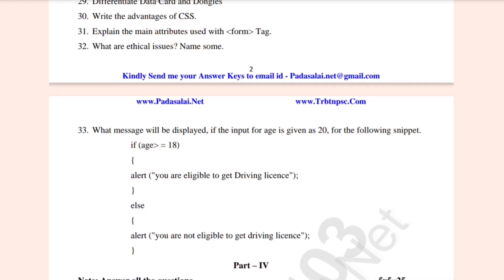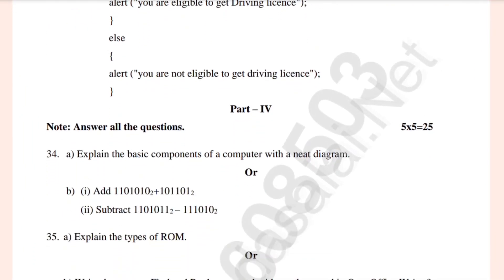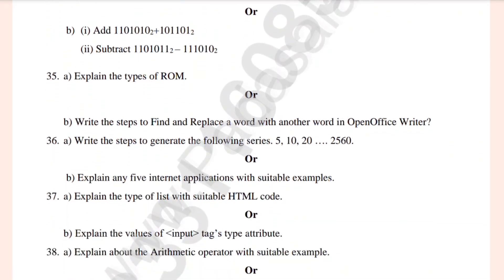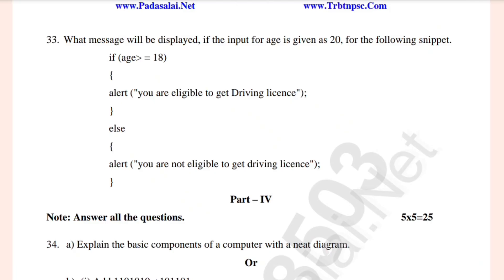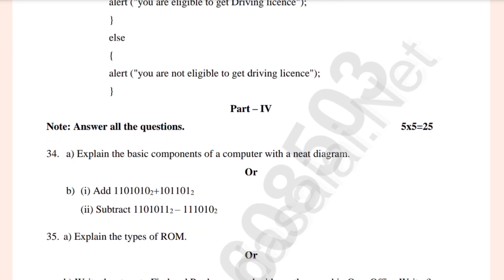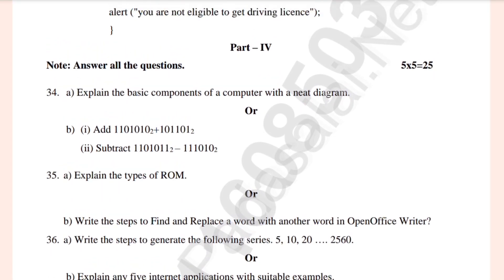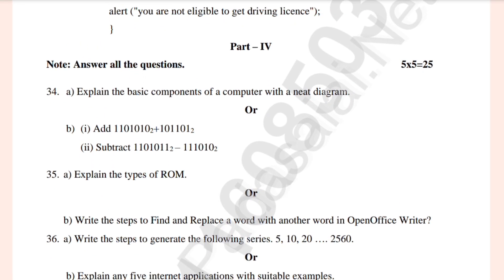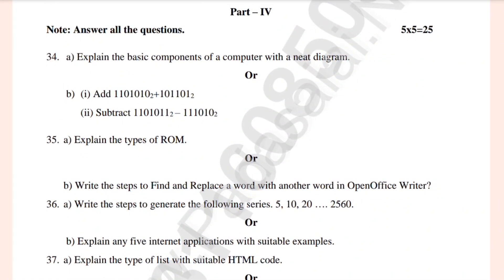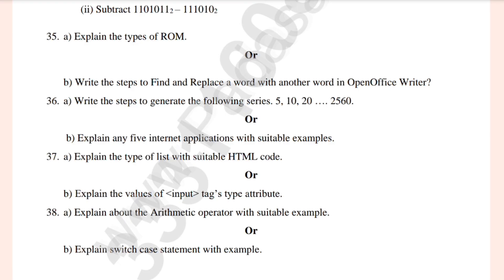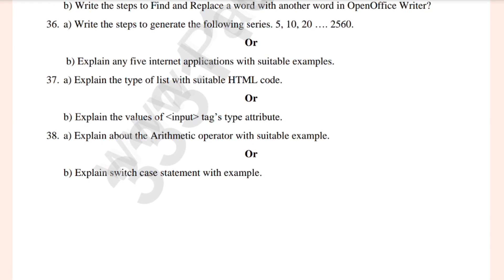What message will be displayed? This is a compulsory question. Part 5, 5-mark section: Explain the basic components of a computer with a neat diagram. Explain the types of formatting or write the steps to find and replace a word in OpenOffice Writer. Write the steps to generate the following series or explain any applications with suitable example. Explain the type of list with example in HTML code. Explain the arithmetic operator with suitable example. Explain the switch case statement with example.